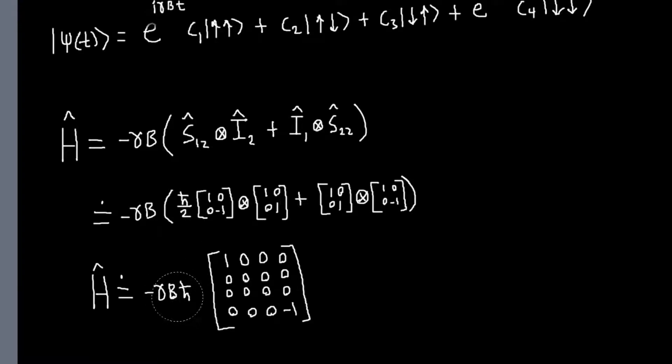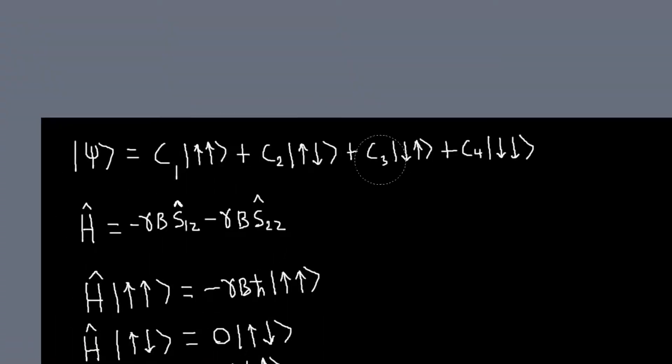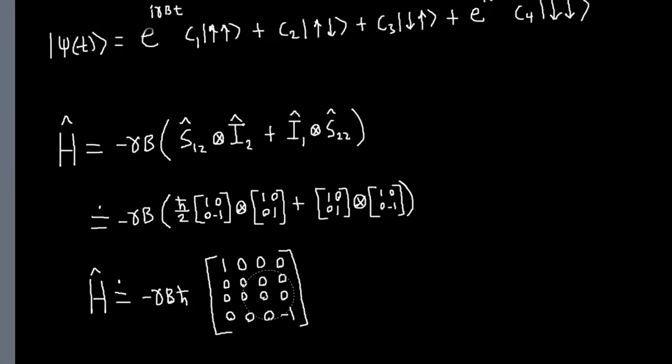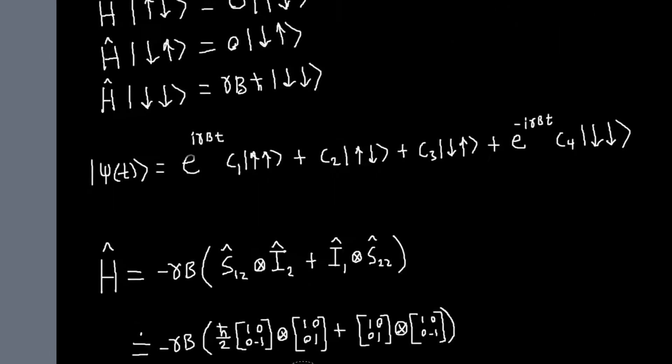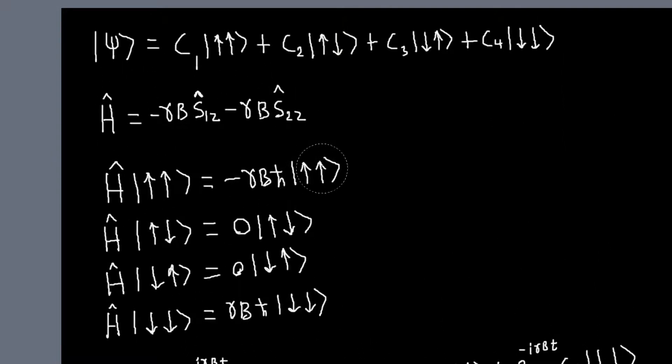So, this is our representation of our Hamiltonian in this basis. And notice it's diagonal, which really, we already knew, that since this basis is an eigenbasis, they're all eigenvectors of the Hamiltonian.